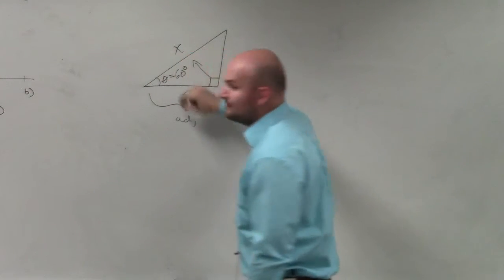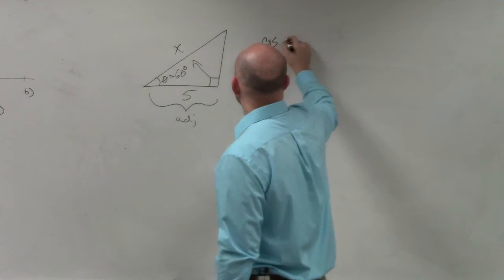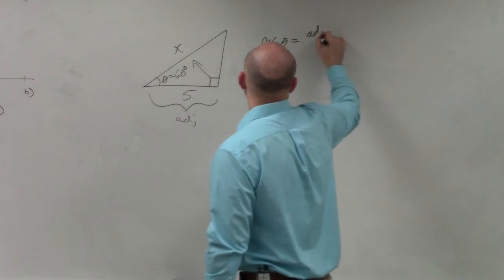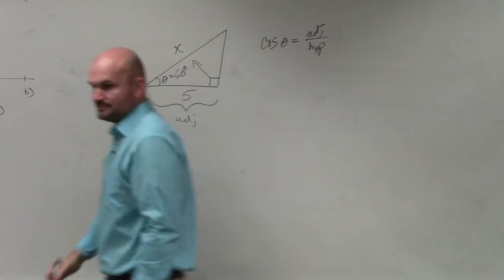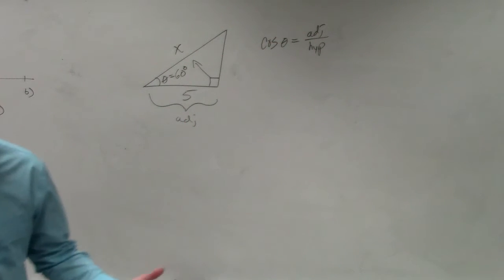Adjacent's always between the angle and the 90 degrees. So since I have adjacent and hypotenuse, I could say cosine of theta equals adjacent over hypotenuse. Right? That's basically what I want to figure out.